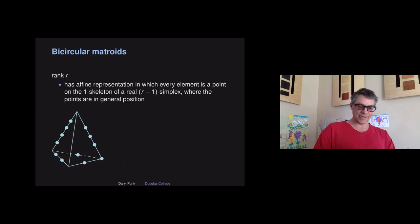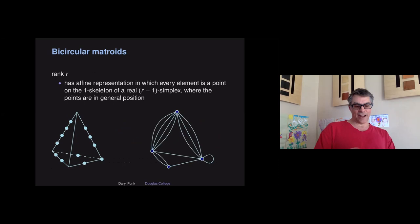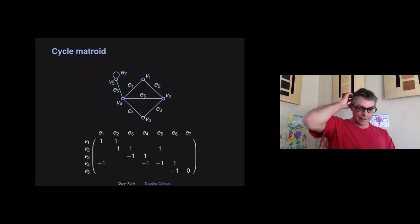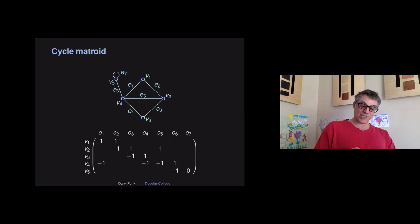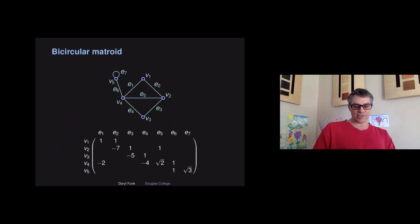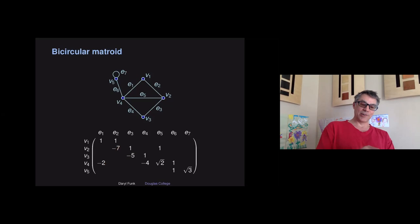We want to have the class closed under minors, so we include direct sums with loops so that we can include loops and have a minor-closed class. These are transversal matroids of set systems where every element appears in at most two sets. They have a really nice affine representation as points on the one-skeleton of a real simplex where your points are always in general position — no coincidental dependencies. You get from any affine representation like this the graph: place a vertex of your graph for every vertex of your simplex, and points on the one-skeleton of your simplex are the edges. If an element is on a vertex, it's a loop. Another way to think of bicircular matroids is by analogy: you get a vector matroid representing a graph from the signed incidence matrix of your graph. Replace all the minus-ones with elements that make your sets of columns maximally free, so every cycle is independent. A bicircular matroid is representable over any sufficiently large field.